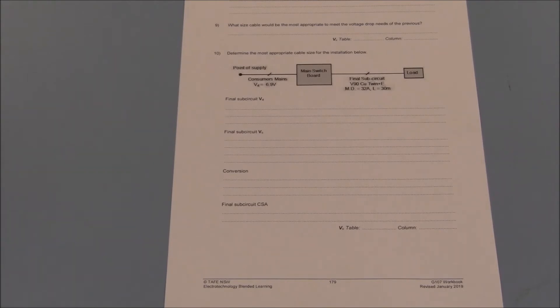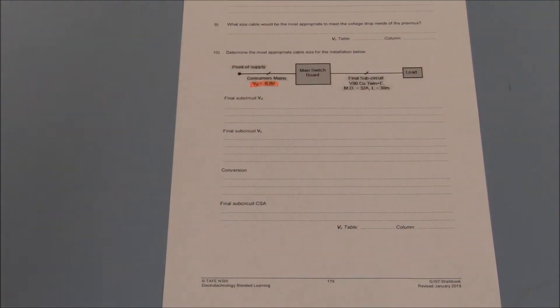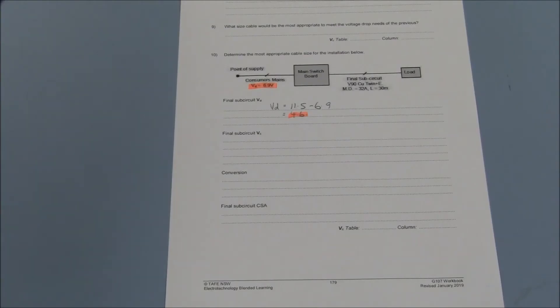This single phase installation has an established voltage drop of 6.9 volts across the consumer's mains. This means the maximum permissible voltage drop across the final sub circuit is 4.6 volts.